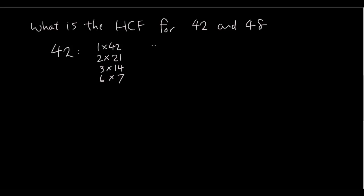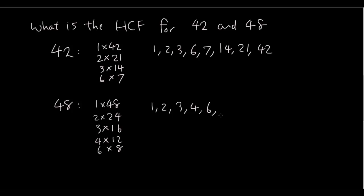So factors of 42 we have 1, 2, 3, 6, 7, 14, 21, 42. And for the number 48, we have 1 times 48, 2 times 24, 3 times 16, 4 times 12, 6 times 8, and that's it. So we have 1, 2, 3, 4, 6, 8, 12, 16, 24, 48.